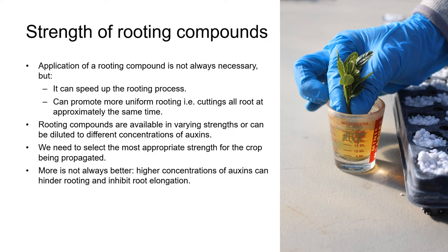Depending on the species we're propagating, the application of a rooting compound isn't always necessary. However, it can speed up the rooting process and promote more uniform rooting, which can compensate for the additional labor cost. Rooting compounds are available in ready-to-use formulations in varying strengths, or they can be bought as concentrates and diluted to the required strength. It's important to remember that using a higher strength than is necessary isn't always better, because higher concentrations of auxins can inhibit root elongation.